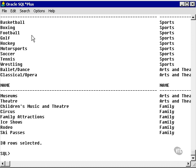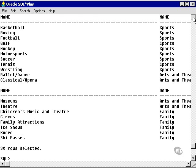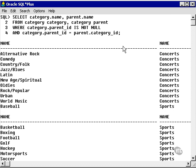And here we go. What we have is the name of the category, and then the name of the parent category.